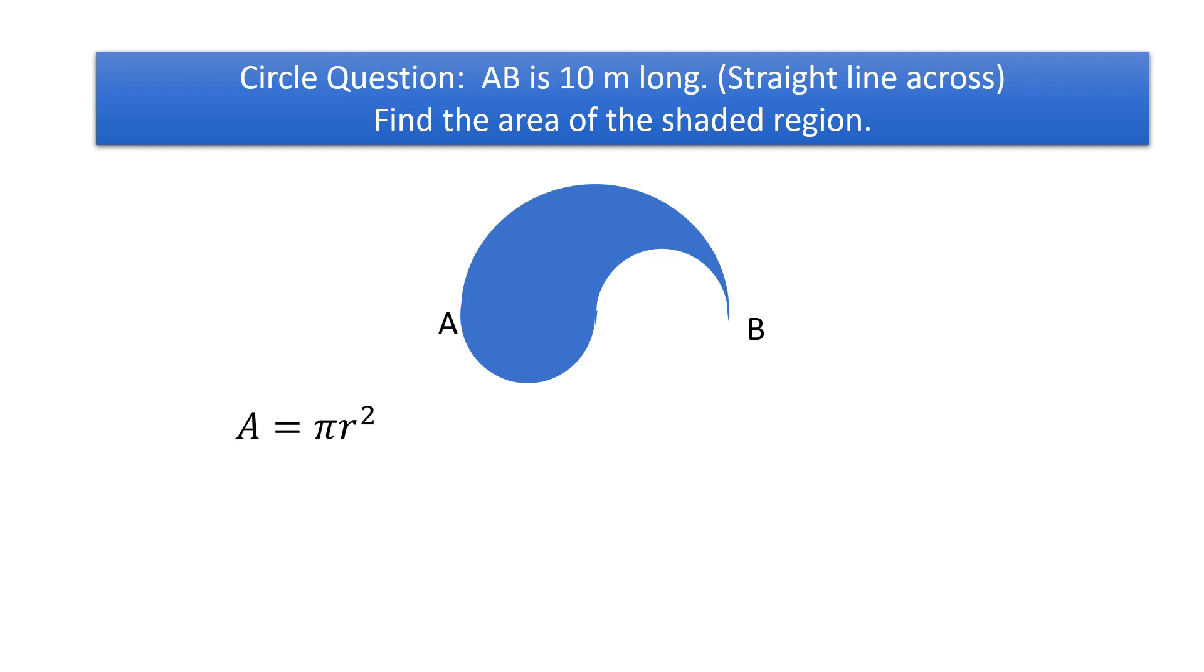So we use the same formula, A equals pi r squared. And then we use one half, or half of the circle, times pi times the radius, because we were given the diameter, right? Squared. And we get a very simple answer, 12.5 pi.